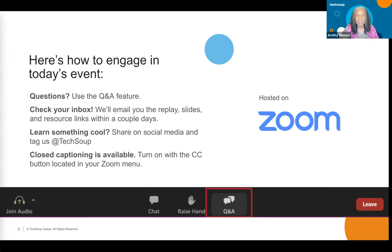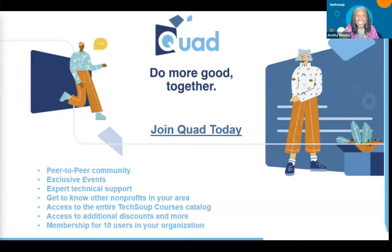If you need closed captions, just click on the CC button at the bottom of your Zoom menu and you'll be able to see the captions at the bottom of the screen. I want to tell you about something really exciting here at TechSoup — it's called Quad. I'll put a link in the chat. It's a peer-to-peer community.